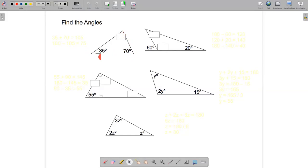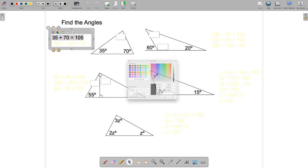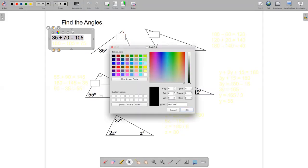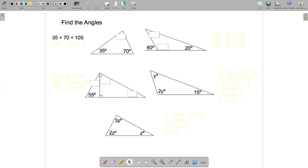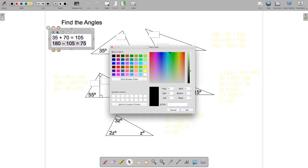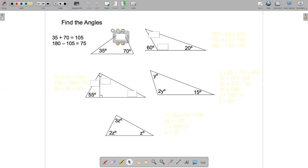Now we know that the angles inside a triangle always add up to 180 degrees. So if I add the two angles that I'm given, 35 and 70, I'll get 105. And then all I need to do is subtract 105 from 180 to get the missing angle. So the missing angle is 75 degrees.